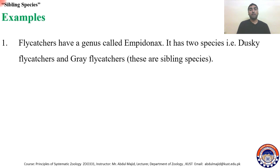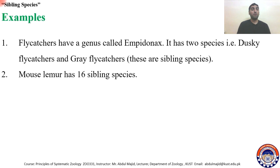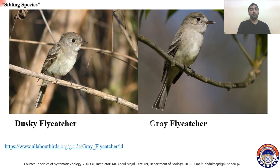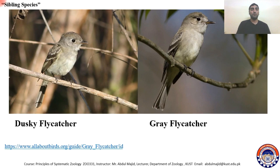As an example, flycatchers have a genus called Empidonax which has two species: the dusky flycatcher and the gray flycatcher, and these two are sibling species. If you look closely at both of them, they are exactly similar, but actually they are two different sibling species. They are not one species because they show reproductive isolation.